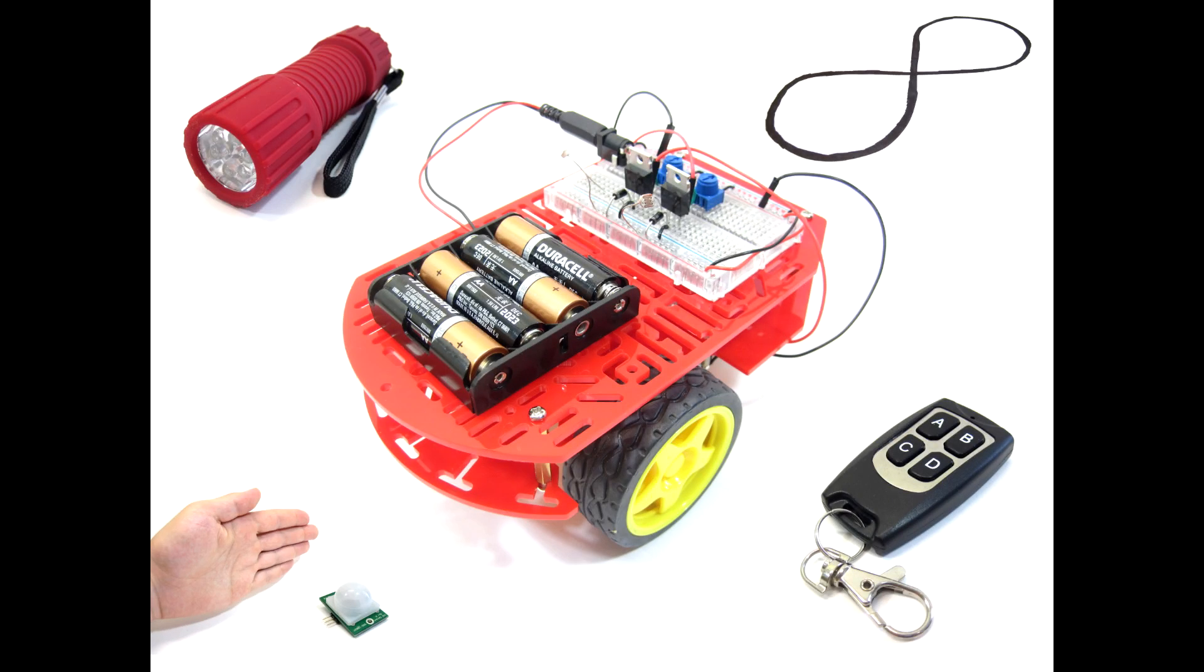You can also use many of the same basic parts to build three different variations of the robot, including a line-following robot, a motion-activated robot, and a remote-controlled robot. See the links in the description of the YouTube video for directions for these projects as well.